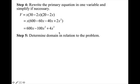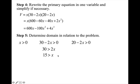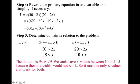In step five, you need to determine the domain in relation to the problem. The value of x, which represents a distance or length, has to be greater than 0. The length also has to be greater than 0, and so does the width. Simplifying those constraints, x has to be less than 15 and x has to be less than 10. So the domain is from 0 to 10. We can't have x values between 10 and 15 because then the width would not work, so it must be only x values that satisfy both constraints.